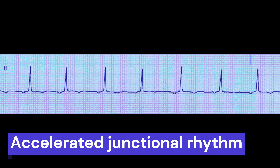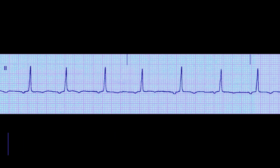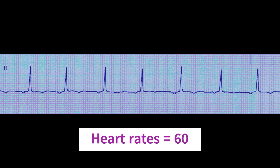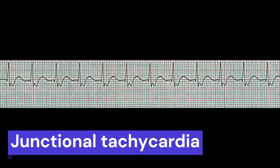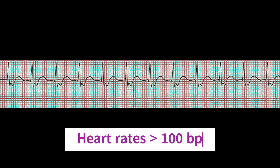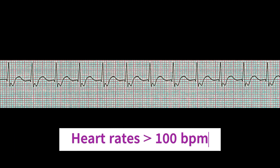An accelerated junctional rhythm occurs when the AV junction takes over the pacing of the heart, resulting in a faster heart rate than the junctional escape rhythm. Junctional tachycardia is a rapid heart rate originating from the AV junction, usually greater than 100 beats per minute.